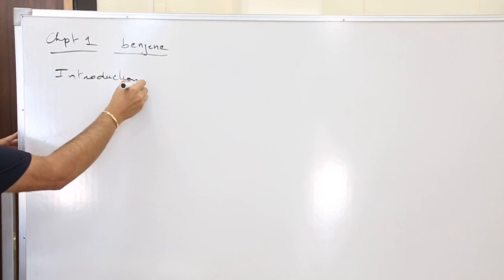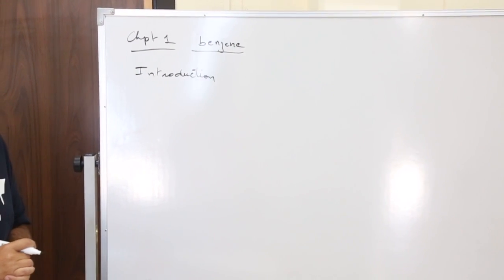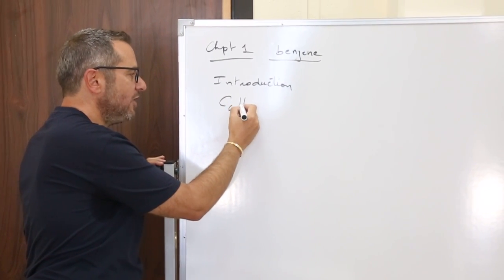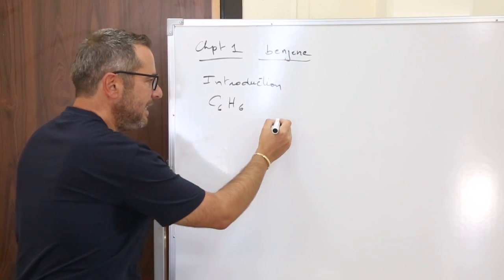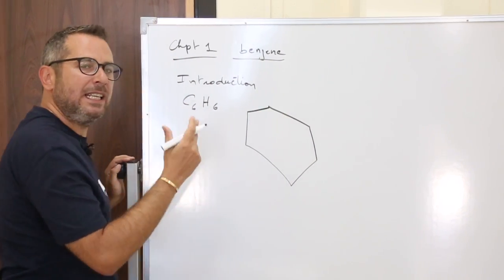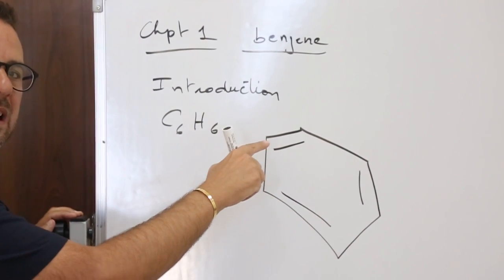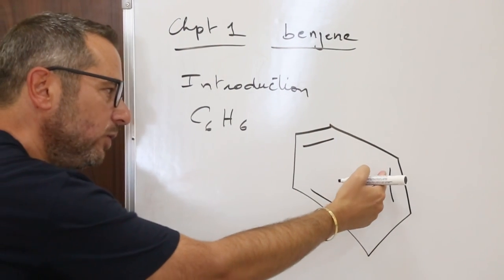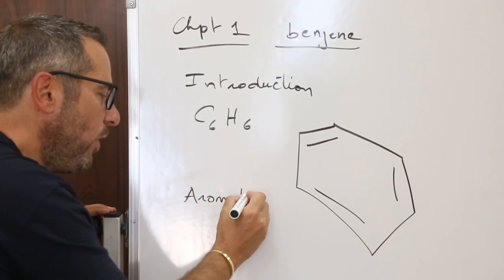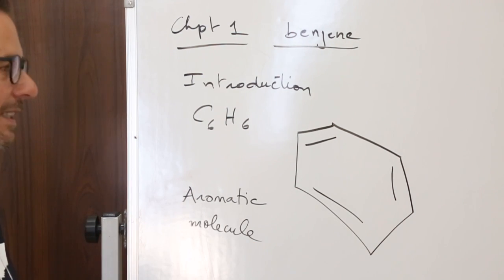Benzene is known since 1825 and the first chemist to propose a structure for benzene was Kekulé. The formula of benzene is C6H6. Kekulé proposed the structure of benzene — it is not an aliphatic molecule. It is a cyclic molecule containing three conjugated double bonds, so this molecule is not aliphatic. It is cyclic containing a certain number of pi electrons. We call it an aromatic molecule. So you have seen in organic chemistry aliphatic and cyclic — here we are going to talk about the aromatic molecule.